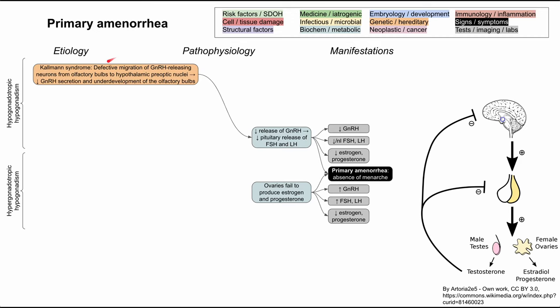Now let's get into the different types of hypogonadotropic hypogonadism. One of the better known causes — a genetic or hereditary cause — is Kallmann syndrome. This is when you have defective migration of the GnRH-releasing neurons from the olfactory bulbs to the hypothalamic preoptic nuclei. Essentially, there's a problem in brain development — you're not able to secrete GnRH because you don't have proper neuron migration, resulting in decreased GnRH secretion and underdevelopment of the olfactory bulbs.